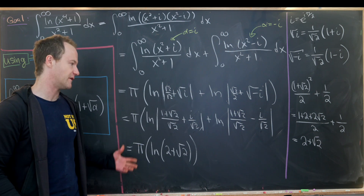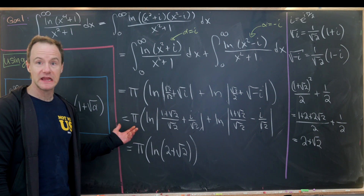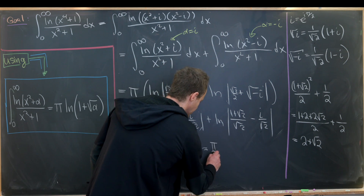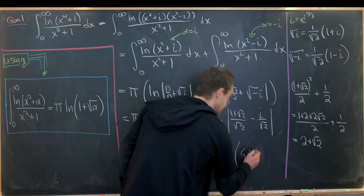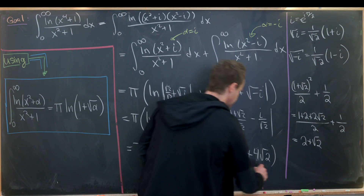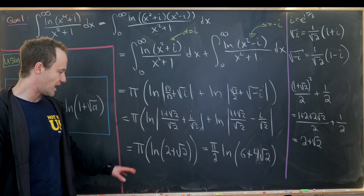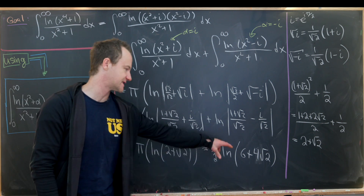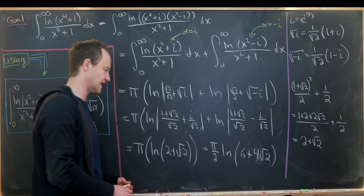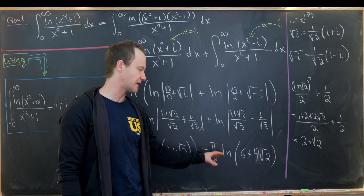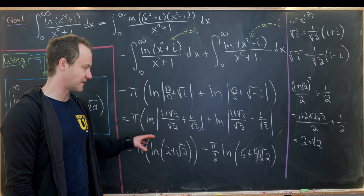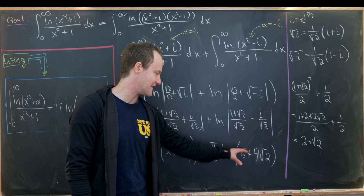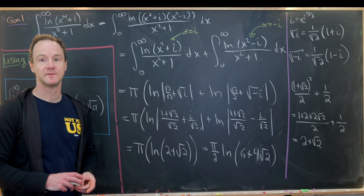Before finishing, note that plugging this into Mathematica gives an equal but slightly different form: π/2 times ln(6 + 4√2). These are the same because squaring the inside of our log gives 6 + 4√2, and the factor of 2 in the exponent brings out a 1/2 by logarithm rules. If anyone has ideas for how Mathematica computes this differently, post in the comments — and that's a good place to stop.